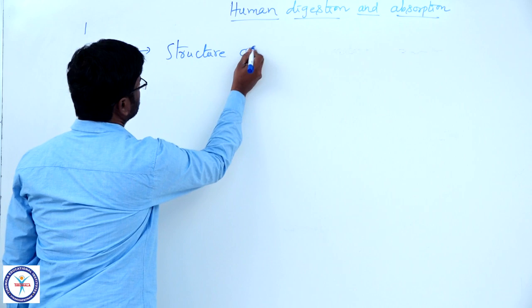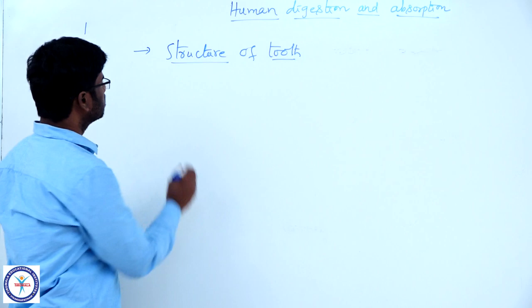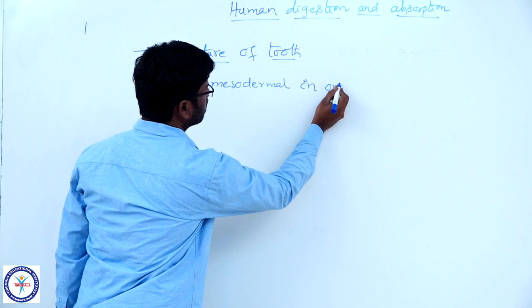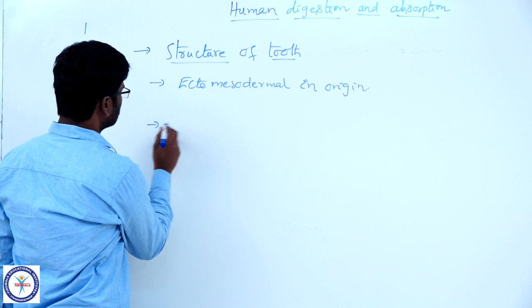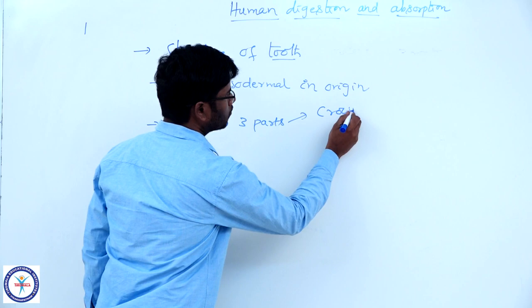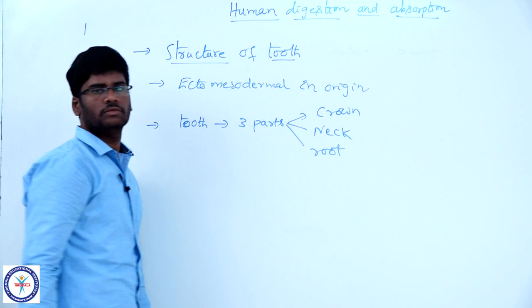Come to the structure of a tooth. Tooth is the singular form and teeth is the plural form. Teeth are ectomesodermal in origin. Each tooth has three parts: crown, neck, and root.